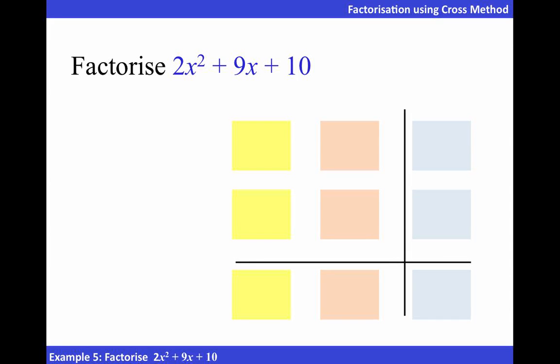Let's factorize the following using cross method. First of all, to get 2x squared, we know that we can have x times 2x.